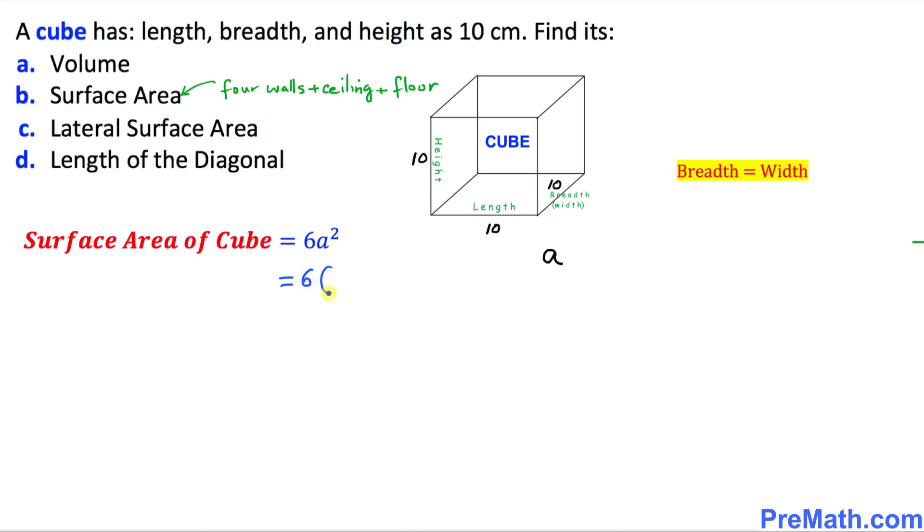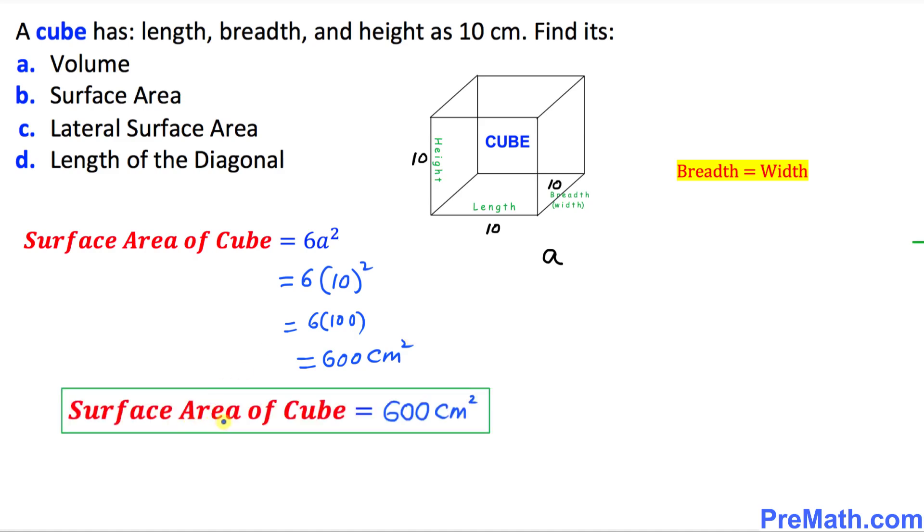So, 6 times—we know the side a is 10 centimeters—squared. That's 6 times 100, which gives you 600 square centimeters. Thus, the surface area of this cube is 600 square centimeters, and that is our answer.